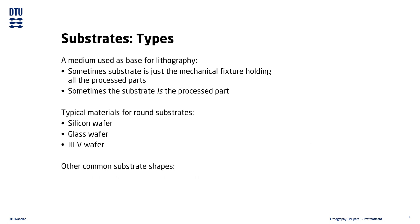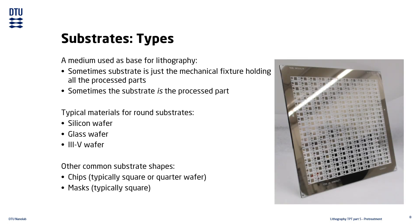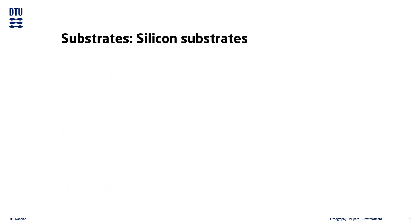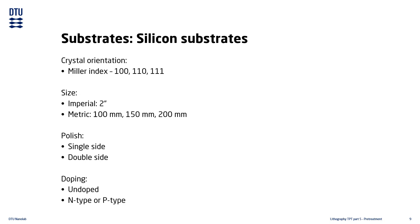Other common substrate types are chips — just another word for smaller pieces from a bigger wafer — and photomasks, which are typically square and used in certain exposure tools as shadow masks. Silicon substrates are divided into subgroups based on a number of parameters: their Miller index crystal orientation, which is either 100, 110, or 111; their size, which can be either metric or imperial (most wafers used at DTU Nanolab are metric, except for 2-inch wafers which are imperial); whether they are polished on one side or both sides; and whether they are doped either positively or negatively.